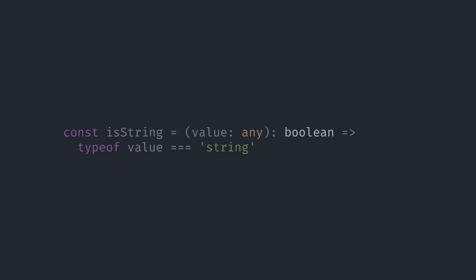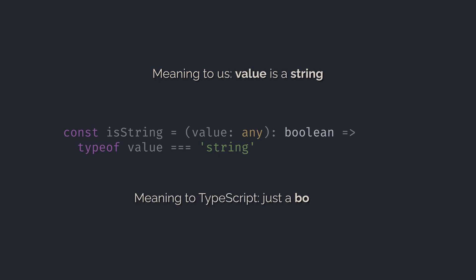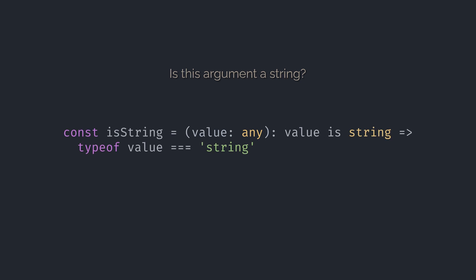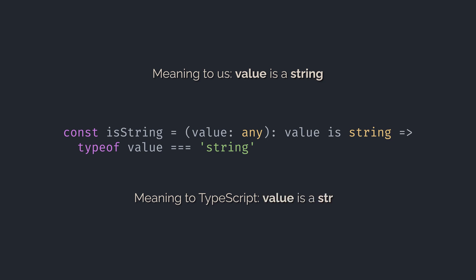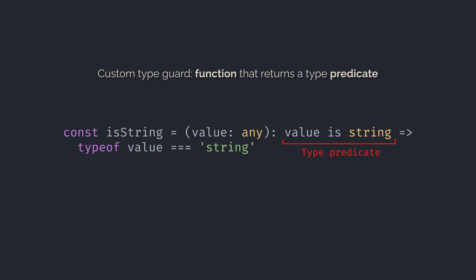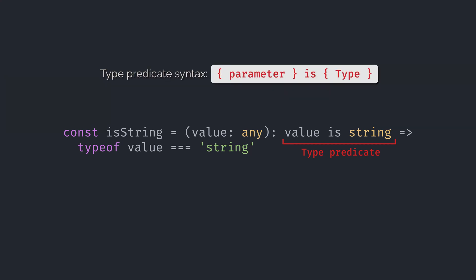Here's the thing: isString is returning a boolean, and we know what that boolean means — it means that the argument is a string. But TypeScript doesn't know what the boolean means, so we need to tell it. Instead of saying that our function returns a boolean, we need to say that our function returns the answer to the question: is this argument a string? Given that the name of our argument is value, we do that with the following syntax: `value is string`. Now TypeScript understands that isString is a type guard, and our format error message function compiles correctly. The return type of our isString function is not just a boolean anymore — it is a type predicate. To make a custom type guard, you just need to define a function that returns a type predicate. All type predicates take the form of `parameter is type`.